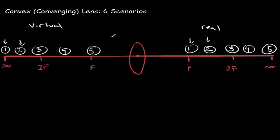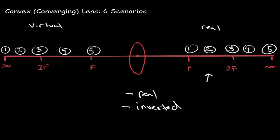What else do we need to remember about these images? The first thing is that all five of these images created on the real side will be real. So if an object is placed at infinity, in between infinity and 2f, at 2f, in between 2f and f, or at f, all the images that appear will be real. They will also be inverted — that means they will be upside down.